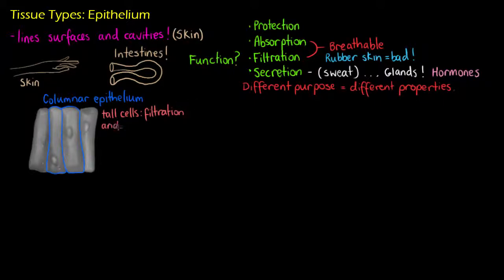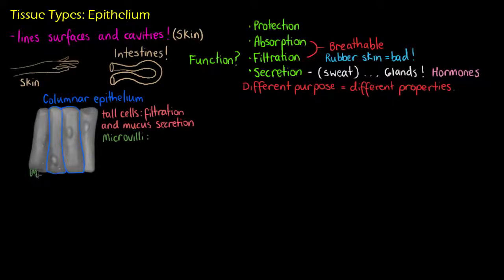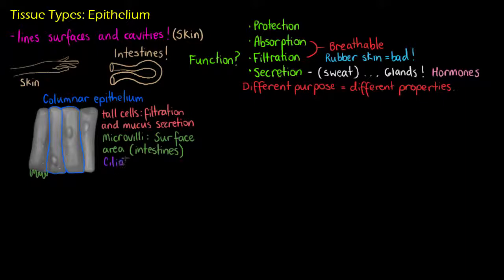We are going to find columnar epithelium in our stomach and digestive tract all the way through to the rectum. Thinking about the food that we eat every day, the first unique structure of columnar epithelium would be the microvilli. The microvilli are very thin extensions of cytoplasm that will drastically increase the absorptive surface area of the cell, and your body will always do its best to absorb all possible food that you are eating.